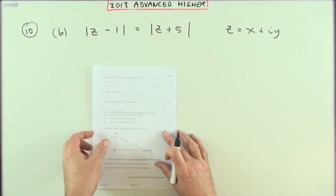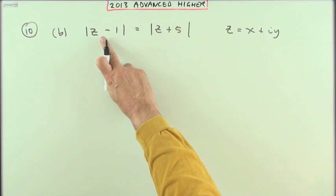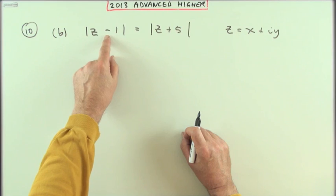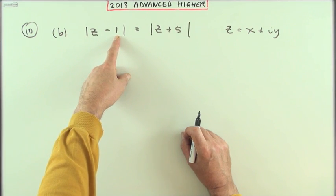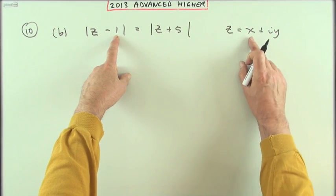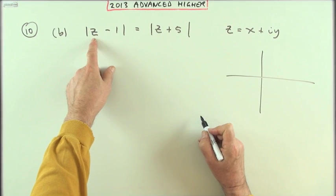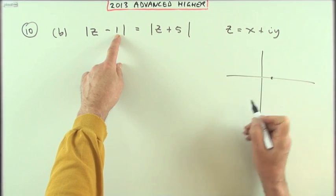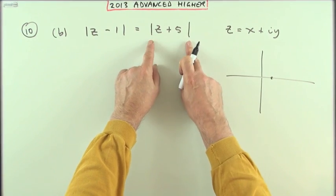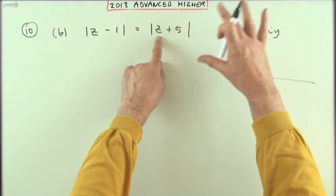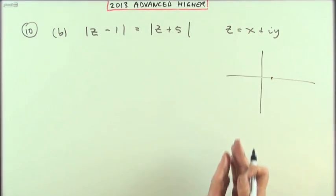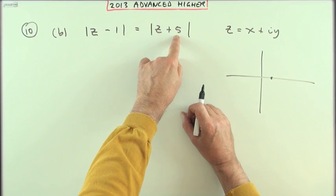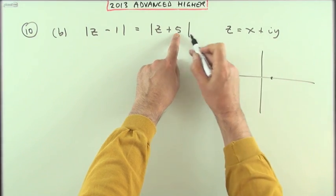Part b: we've got this equation this time. The modulus of that should equal the modulus of that. The interpretation being that the distance of z from the point one (the real number one, so that's the point (1,0)) is the same as the distance of point z from negative five. The distance from z minus that would be negative five, which is the real part, so that's the point (-5,0). If you have to stay the same distance from both points, you have to stay on isosceles triangles.